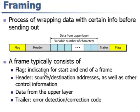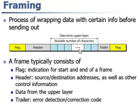Flag indicates the starting and ending of the frame. Header tells the source or destination address as well as the control information — from where the frame is sent and where it is to be sent. Trailer tells the error detection code — it tells whether the data is correctly received at the receiver. Flag tells the starting and ending of the frame.